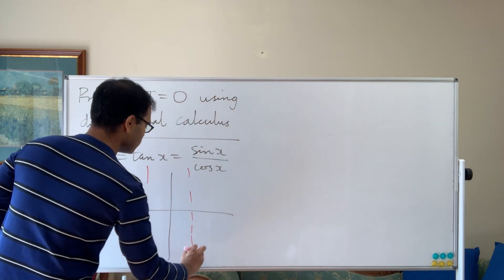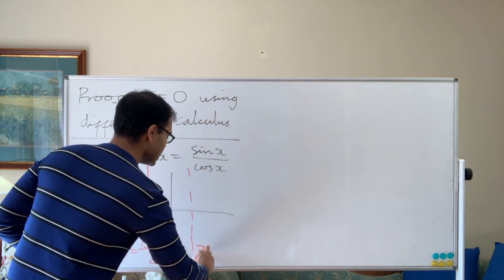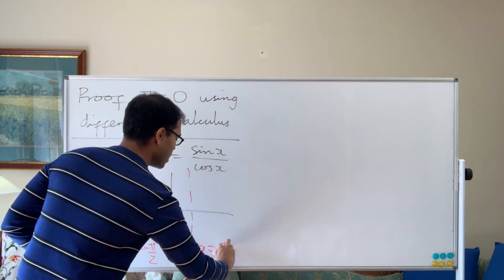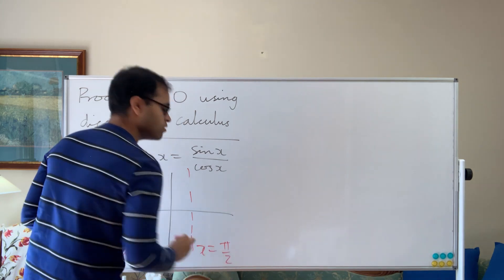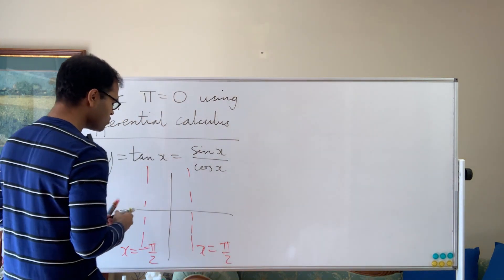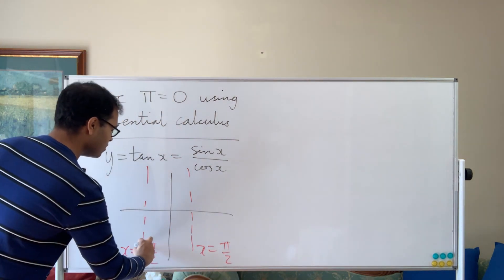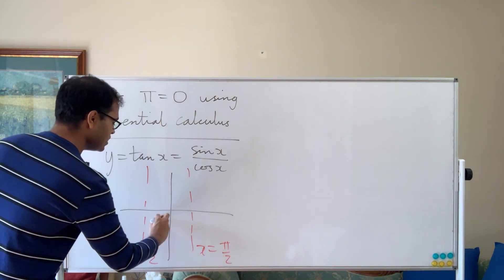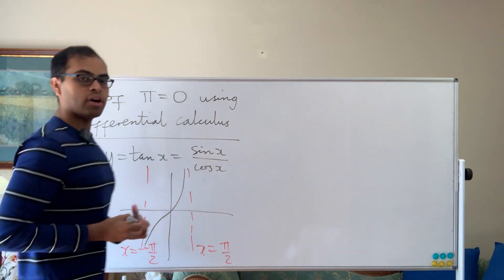We can draw these vertical lines: x equals negative pi over two and x equals positive pi over two, and graph the function y equals tan x, which looks something like this.